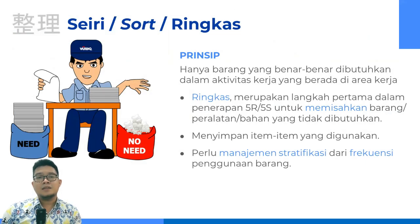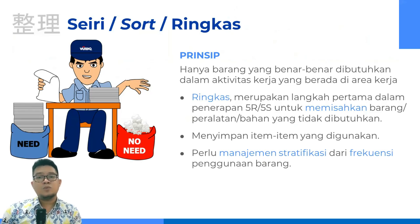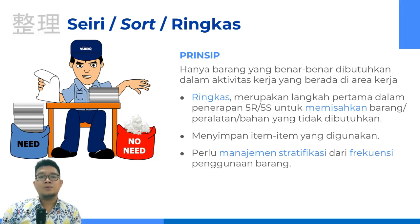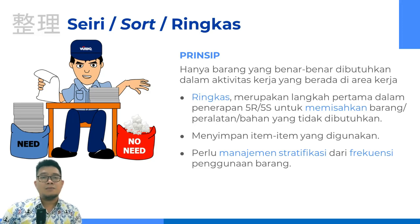S yang pertama, yaitu Seiri atau Sort, dalam bahasa Indonesia adalah Ringkas. Prinsipnya, hanya barang-barang yang benar-benar dibutuhkan dalam aktivitas kerja yang ada di area kerja kita. Ringkas merupakan langkah pertama dalam penerapan 5R dan 5S untuk memisahkan barang-barang ataupun peralatan ataupun bahan yang tidak dibutuhkan. Hanya bahan-bahan yang dibutuhkan yang kita simpan di area kerja. Oleh karena itu, dalam melakukan ringkas ini diperlukan manajemen stratifikasi dan frekuensi penggunaan barang, mengklasifikasikan mana barang yang sering digunakan, yang kadang-kadang digunakan, ataupun yang tidak pernah digunakan.